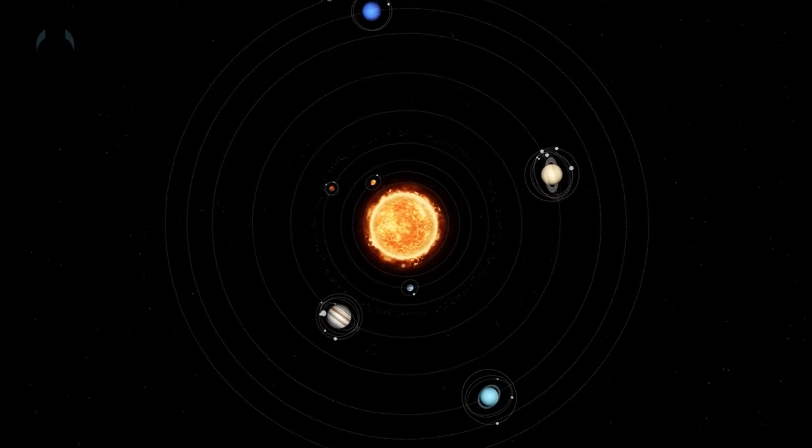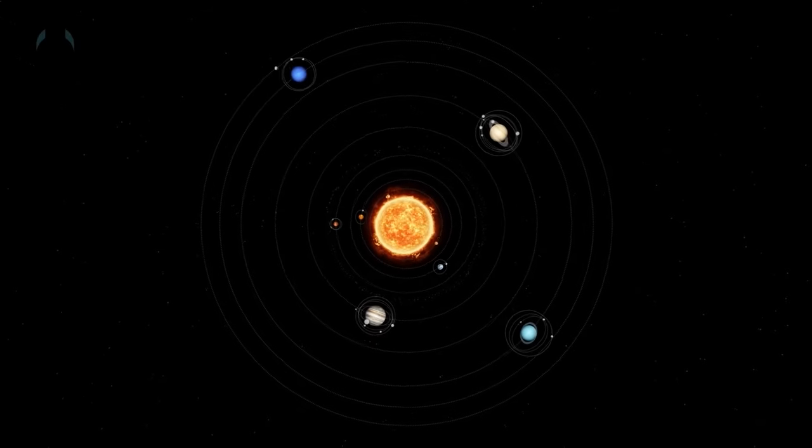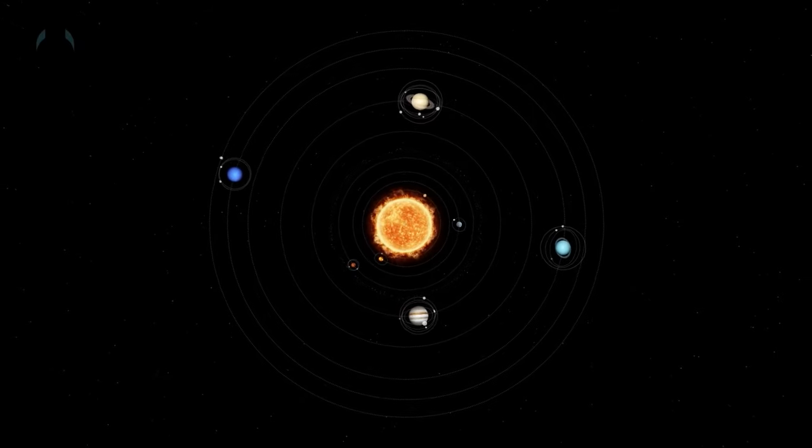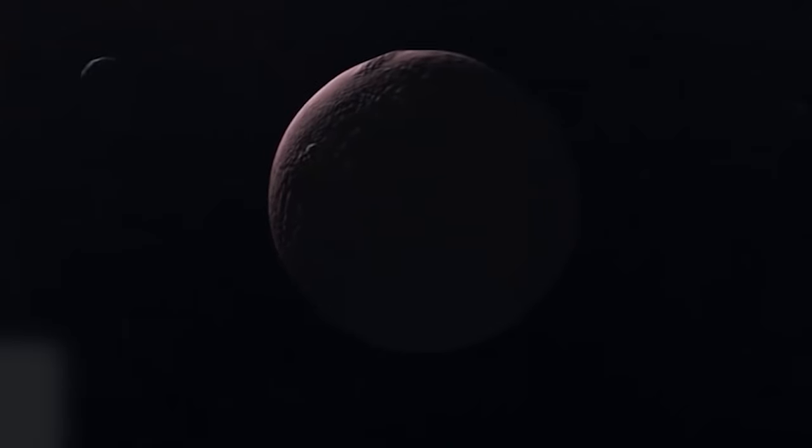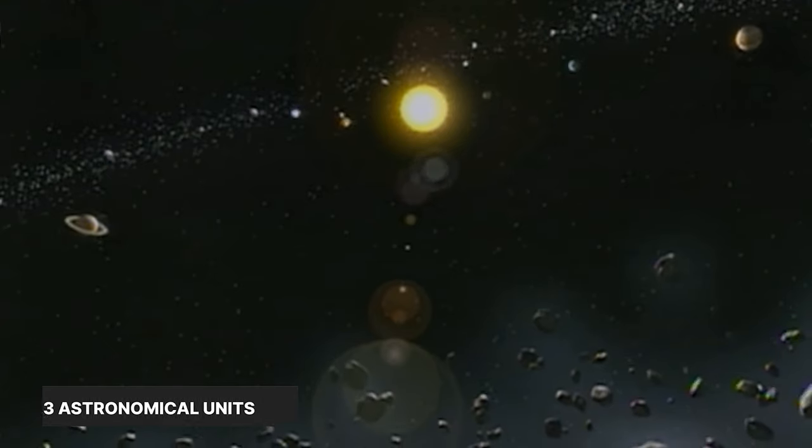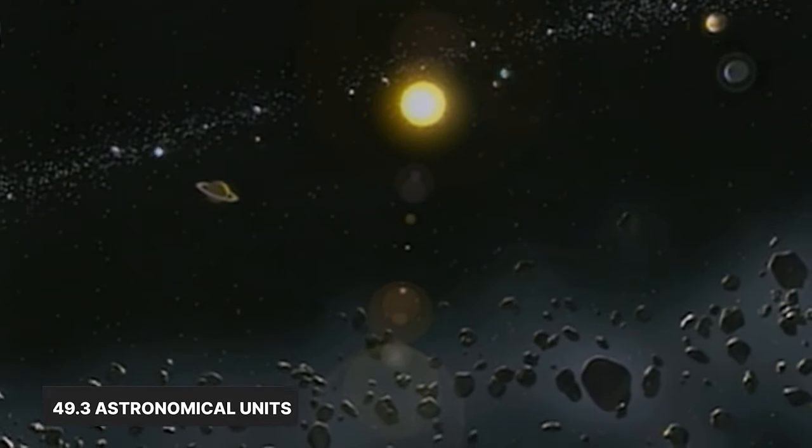Since then, Pluto's distance from the sun has steadily increased, with its greatest distance expected to occur in 2113 when it reaches its aphelion, situated 49.3 astronomical units away from the solar system's center.